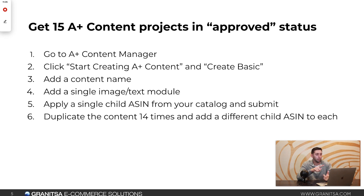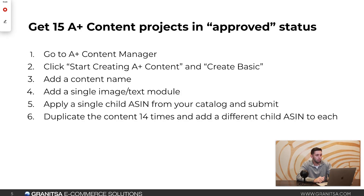Add a name. You can add a single image and just upload your logo, or add a single text module and just put your brand name. Just for the sake of getting access to premium, upload a single image with your logo or a text module — keep it basic. Then put a single child ASIN from your catalog into the A-plus content project and hit Submit. Do the same thing 14 times, adding a different child ASIN to each A-plus content.